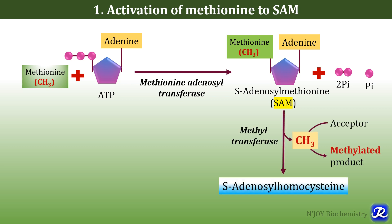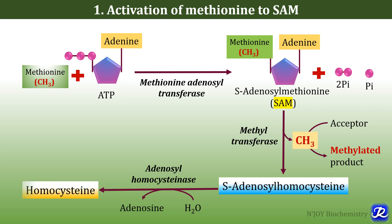S-adenosyl methionine donates its methyl group to an acceptor, which becomes the methylated product. This reaction is catalyzed by methyl transferase, and SAM becomes S-adenosyl homocysteine. This S-adenosyl homocysteine is then acted upon by adenosyl homocysteinase to form homocysteine and adenosine, and this homocysteine can have multiple fates.